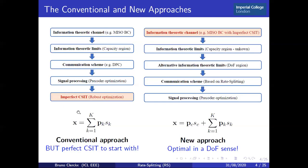What we are going to do in this novel approach is to bring imperfect CSIT not as the last step but as a first step. So we actually look at the information-theoretic channels of a multi-antenna broadcast channel with imperfect CSIT.